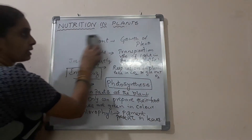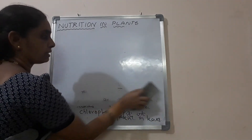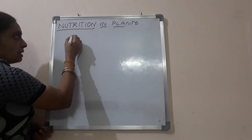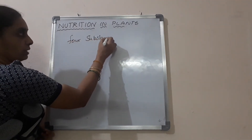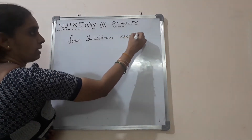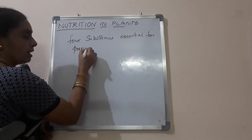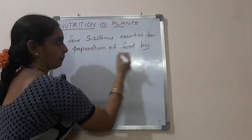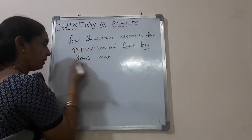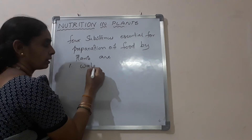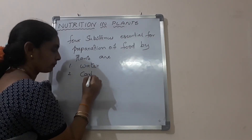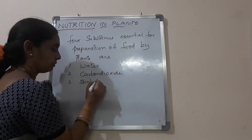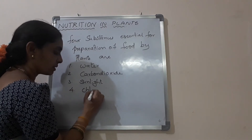Now we will look at the photosynthetic reaction or photosynthetic process. For plants to carry on this process — that is the preparation of food — it needs four substances. The four substances essential for preparation of food by plants are: number one, water; number two, carbon dioxide; number three, sunlight; and number four, chlorophyll, the pigment present in the leaves.